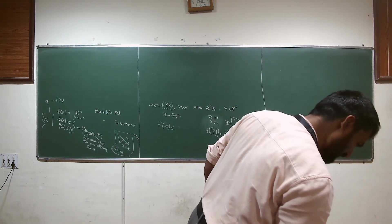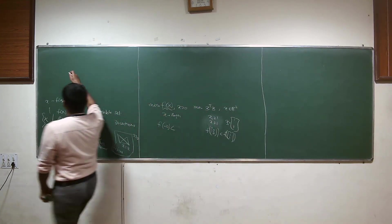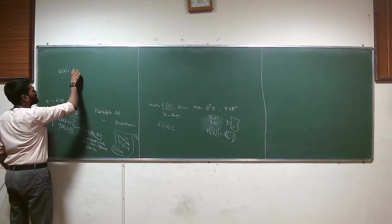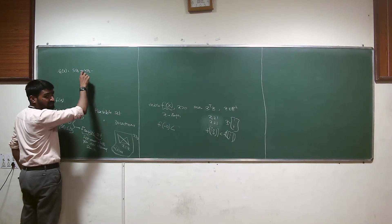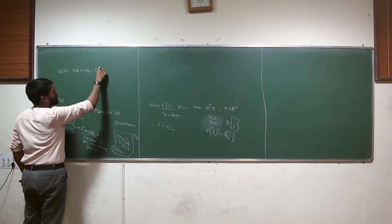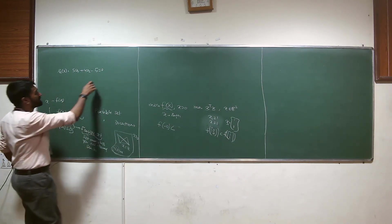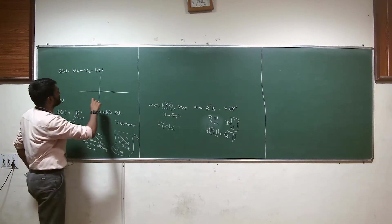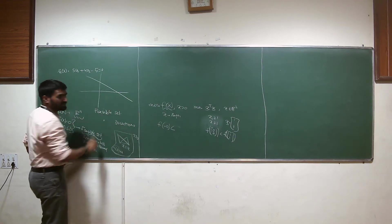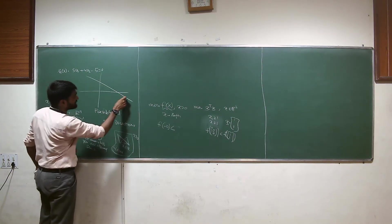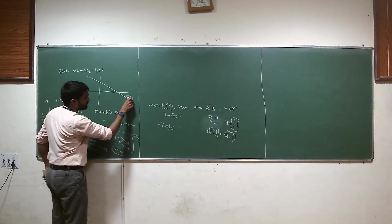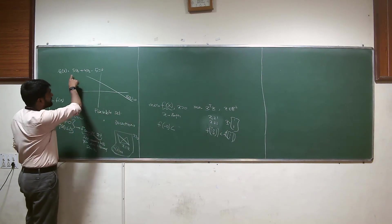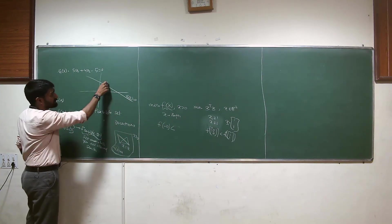Let's do the first one. Just read out the first one. The first constraint: this is the only constraint we have. This is in R², so I can plot it. This will probably be some line — this is your h of x equals zero. So the set of all values of x that satisfy this line is your feasible set F.